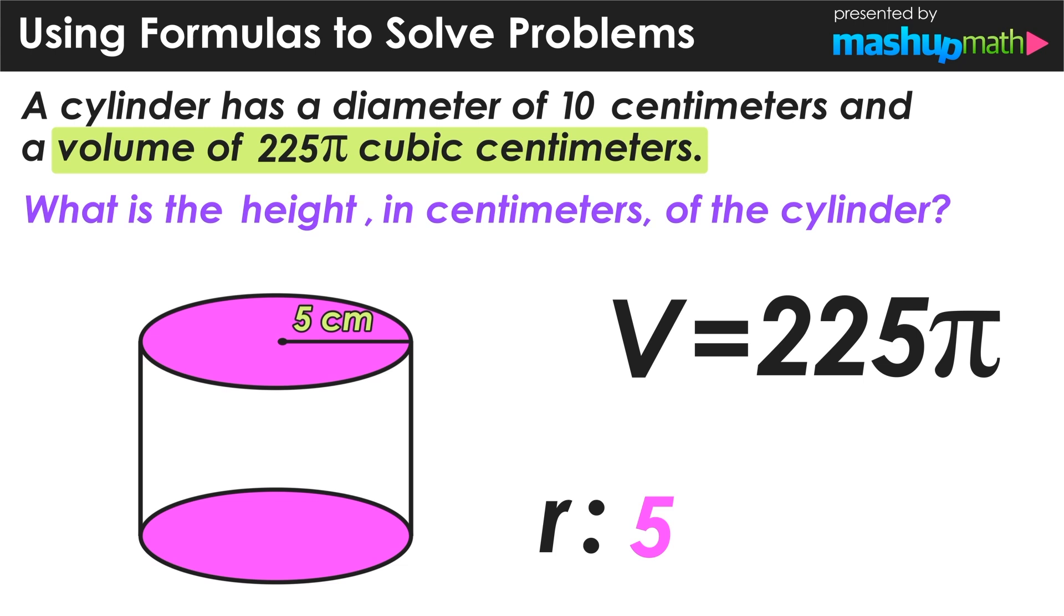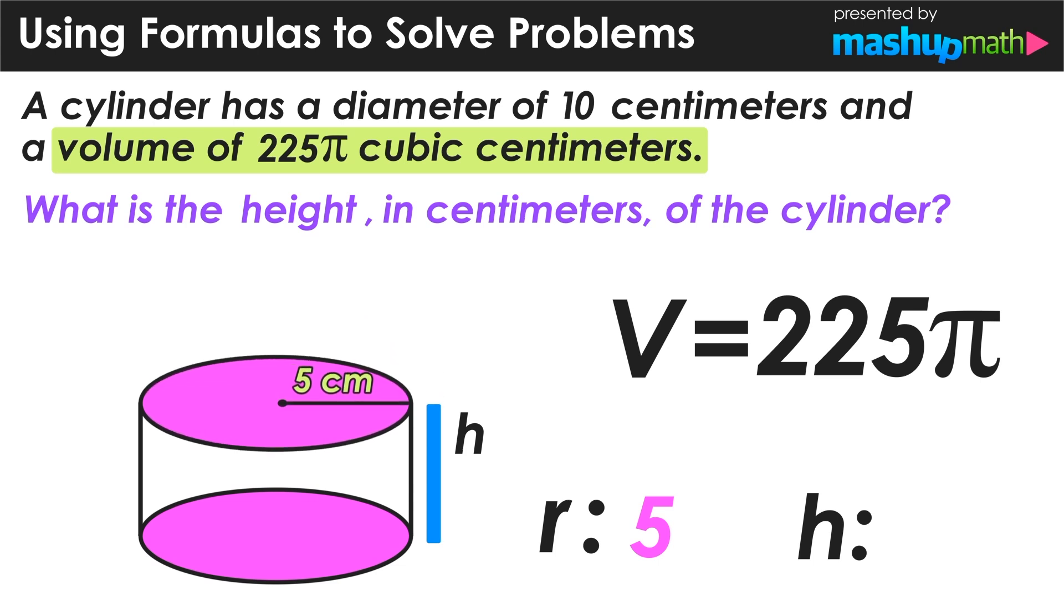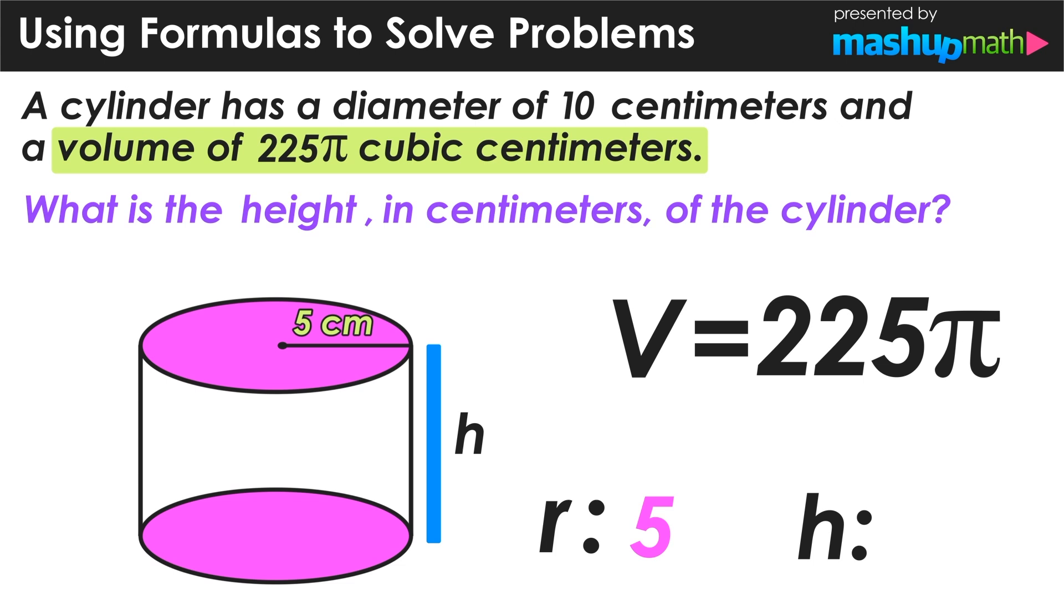So we can represent this by writing that v, the volume, is equal to 225 pi. And what we are actually trying to figure out in this problem is the height of the cylinder in centimeters since we don't actually know how tall this cylinder is. So what we will be solving for is the value of h, the height of the cylinder in centimeters.